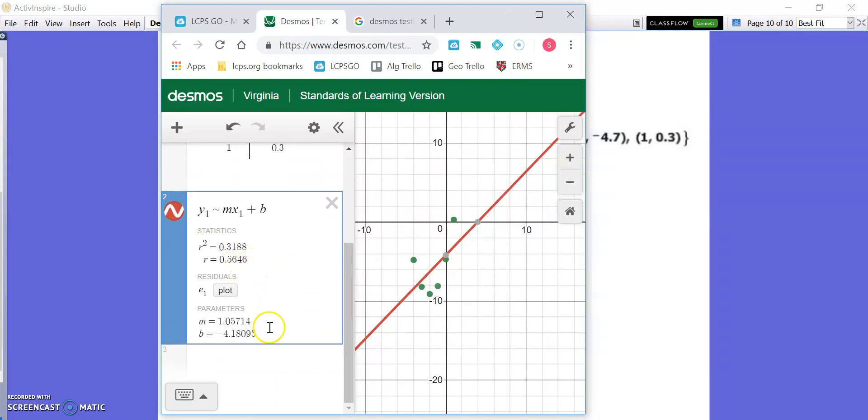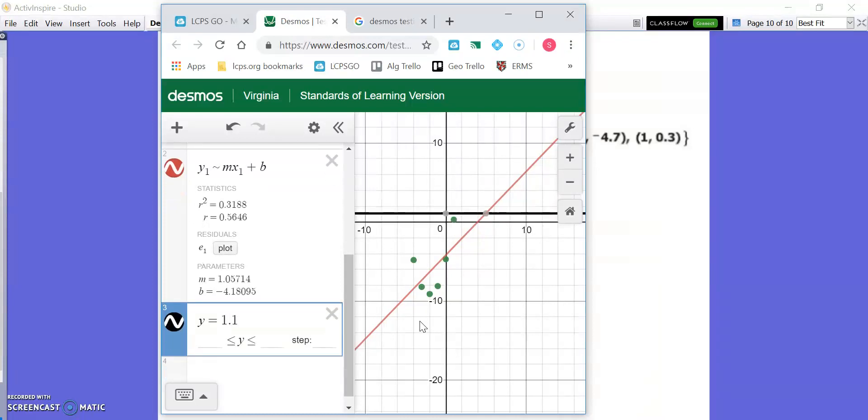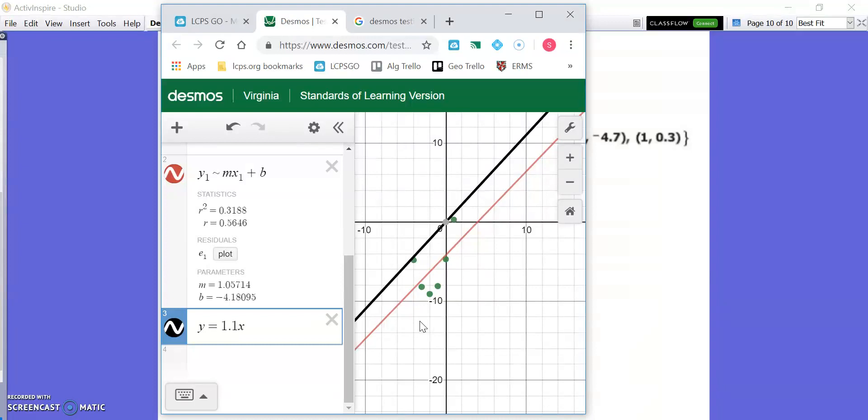It gives you your equation here. Your equation is y equals - I'm just typing it so you know what it looks like - 1.1x (rounding m = 1.057 to the tenths place) minus 4.2 (from b = -4.18). You see how it overlaps this red line? It's not quite the same because I rounded. This is what the equation would be for linear. As you can clearly see, these points aren't on there.